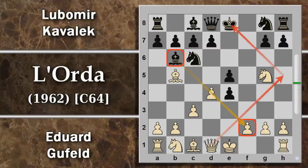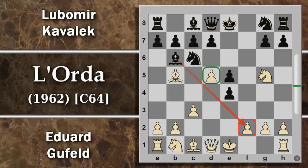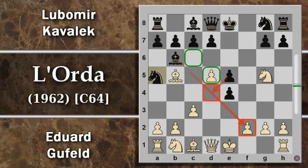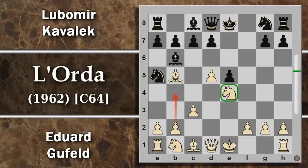Gufeld decide di giocare d5, aprendo la diagonale all'alfiere, ma c'era grossa pressione su quel pedone e probabilmente voleva conquistarlo. Contraattacca il cavallo, che potrebbe avere difficoltà a trovare casa. Se va in a5, il bianco si può permettere cavallo e4, scacciando ulteriormente il cavallo: è una posizione non facile da difendere per il nero.